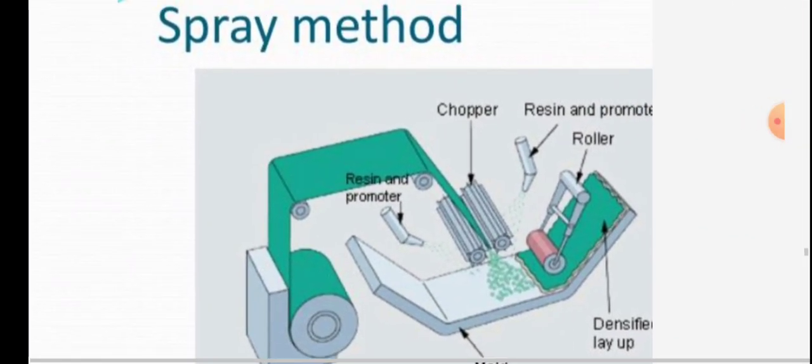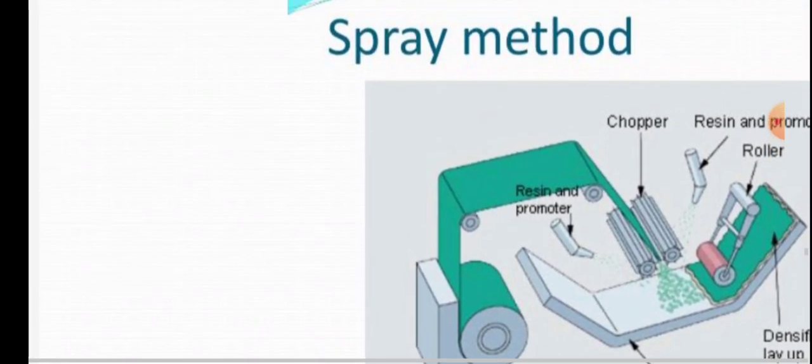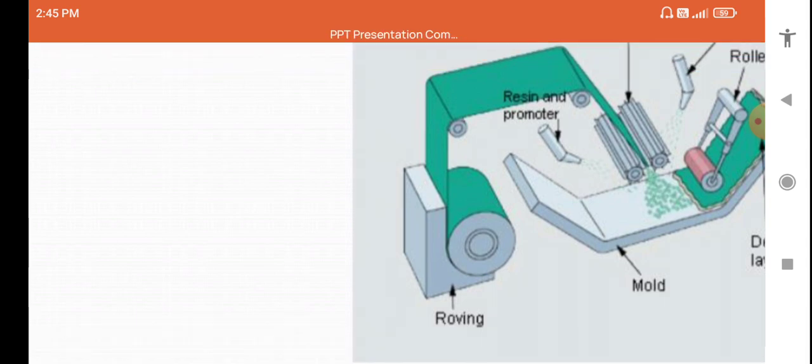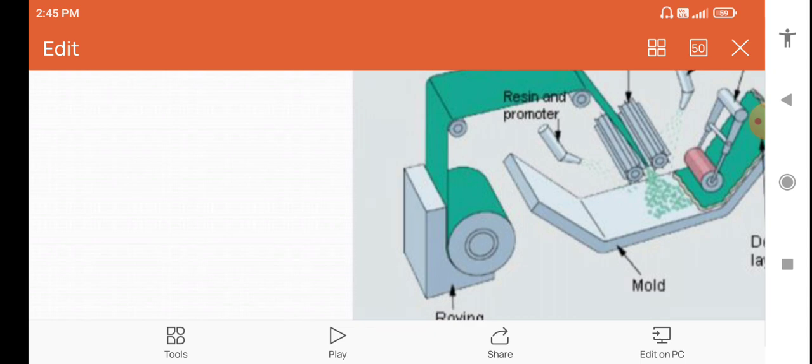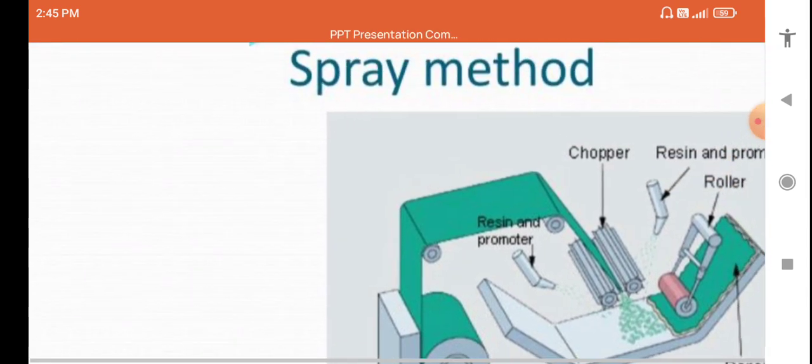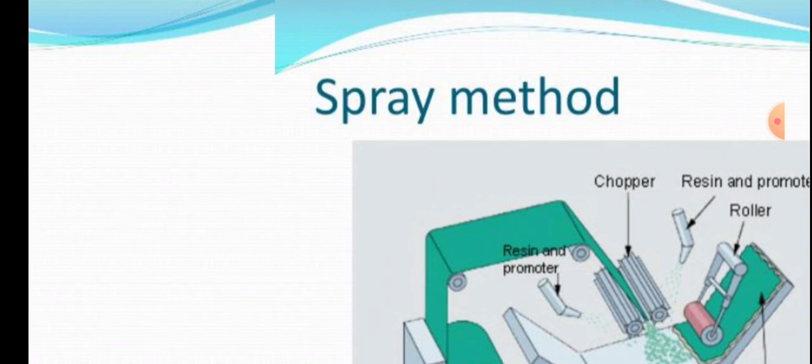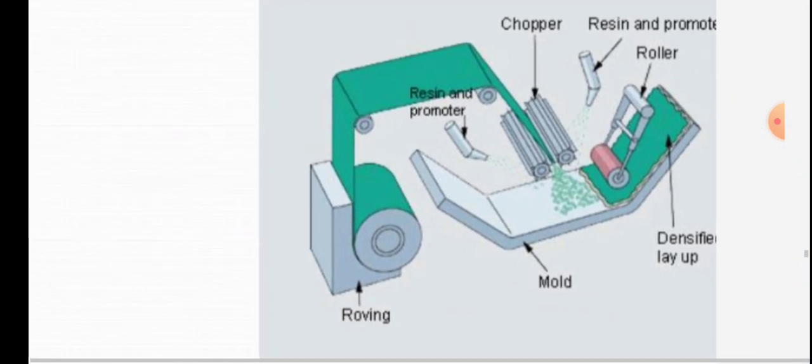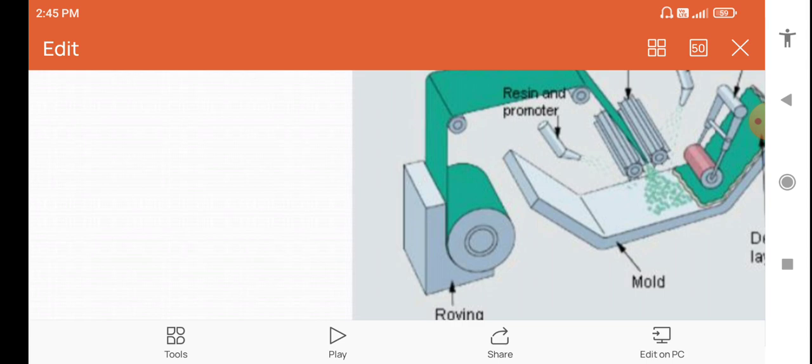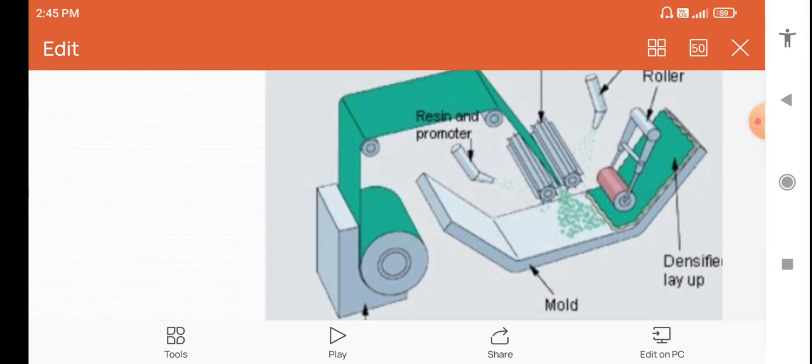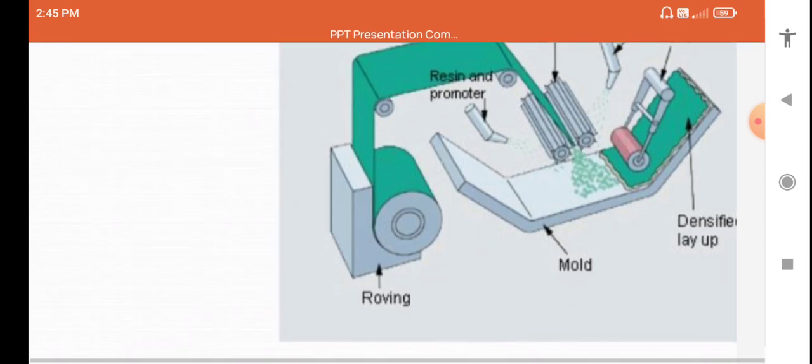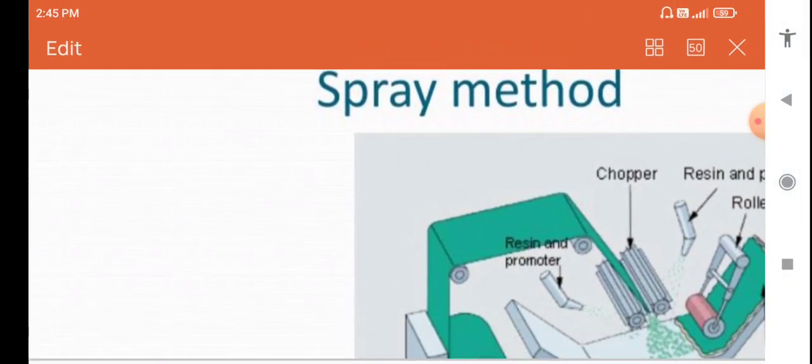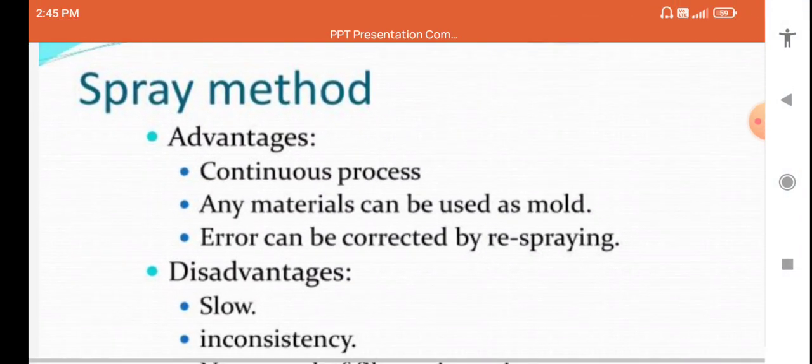Spray method. The figure shows the spray method of processing. This figure shows chopper, resin promoter, roller, resin and promoter, and layers of mold. These are parts of the spray method.